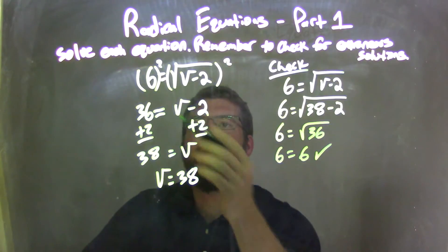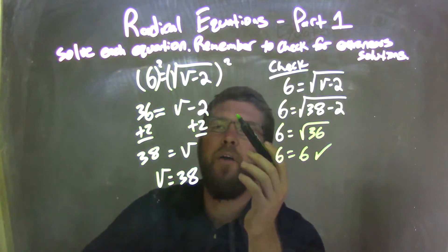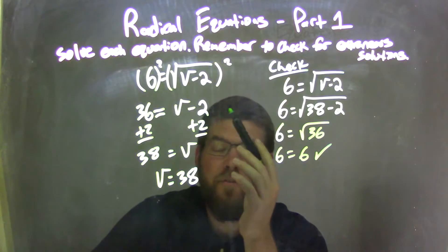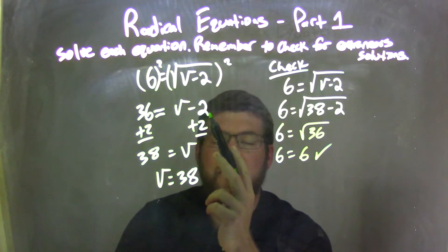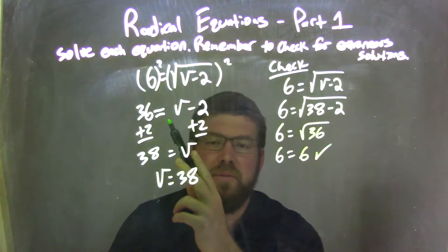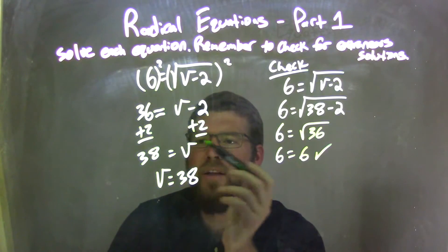So let's recap. We started with 6 equals the square root of v minus 2. And then squared both sides to eliminate the square root, leaving me with 36, which is 6 squared, equals v minus 2. Added 2 to both sides.